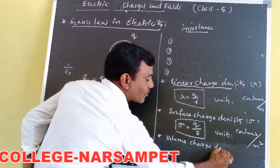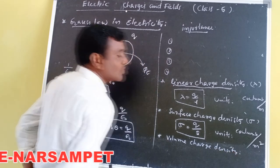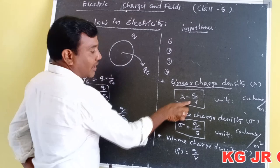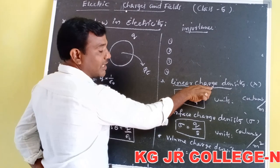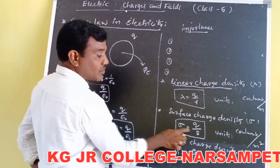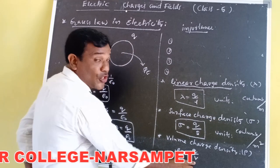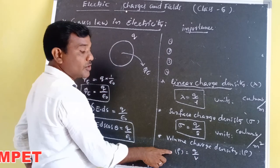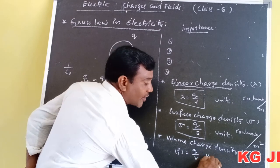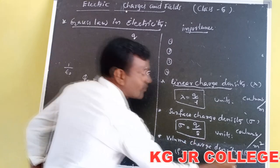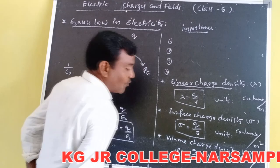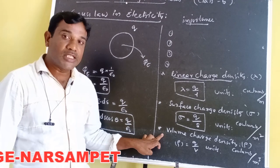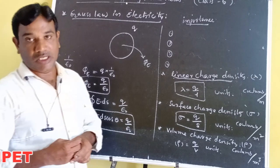The third definition is volume charge density, denoted by rho (ρ). Just as unit length gives linear charge density and unit surface area gives surface charge density, the charge per unit volume of a conductor is known as volume charge density. Then ρ = Q/V. The unit is coulombs per meter cubed (C/m³). These three — linear, surface, and volume charge density — are important definitions for Gauss's Law.